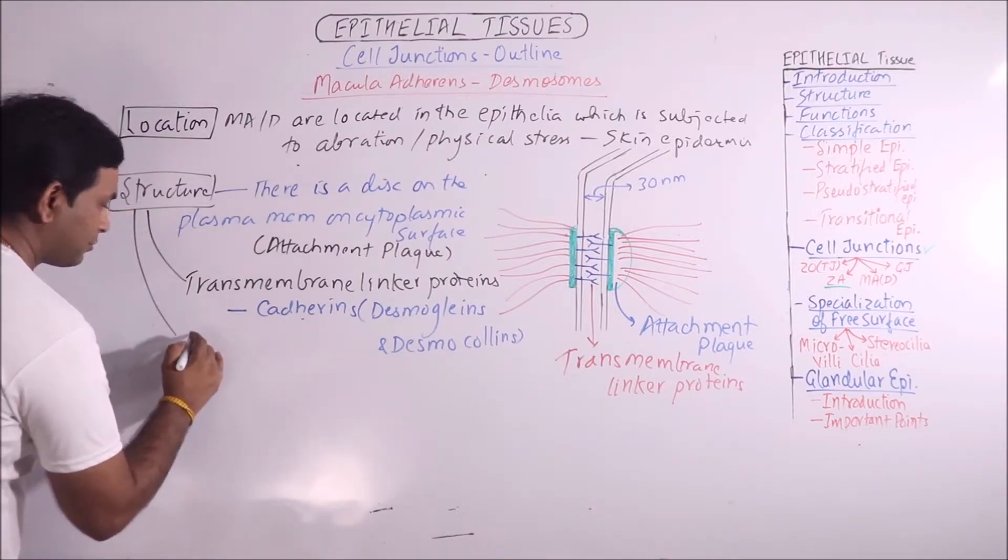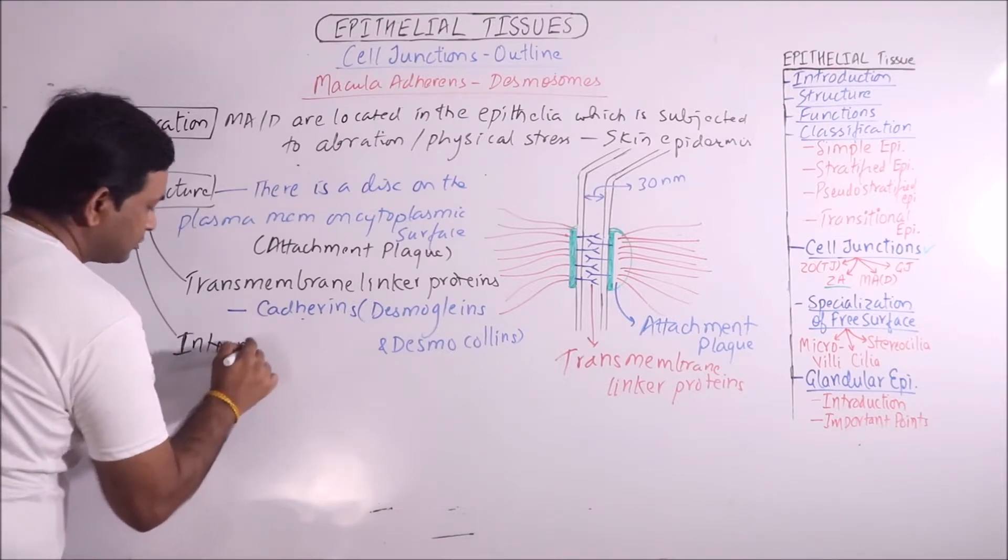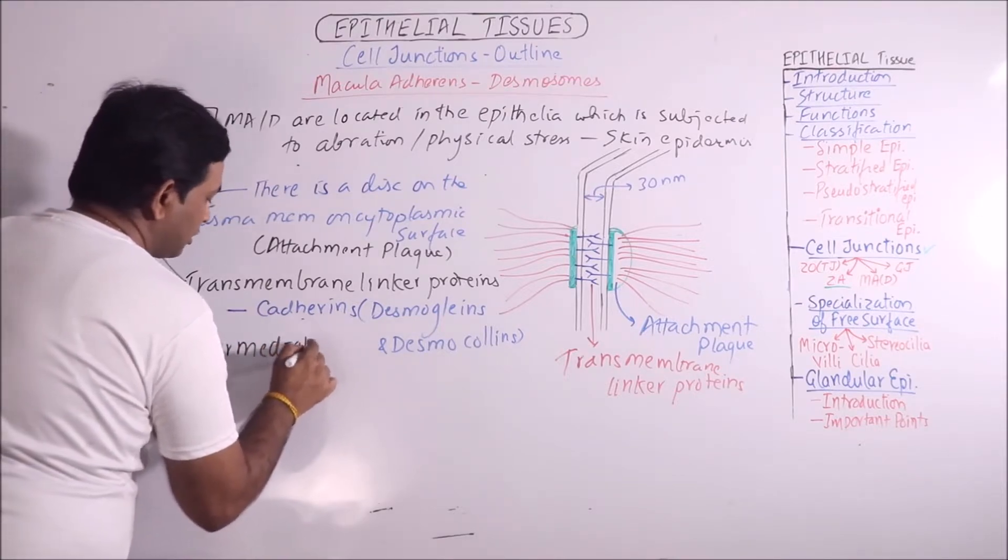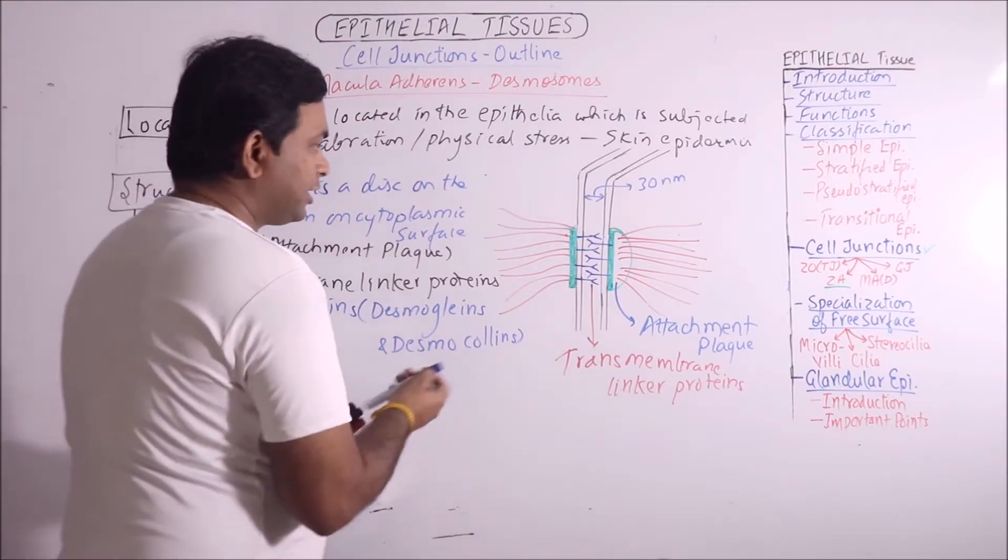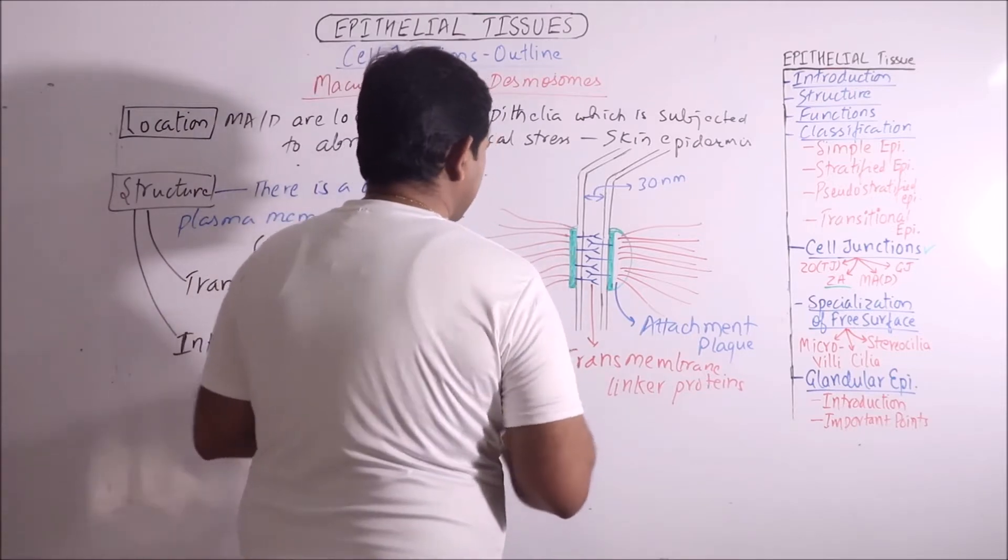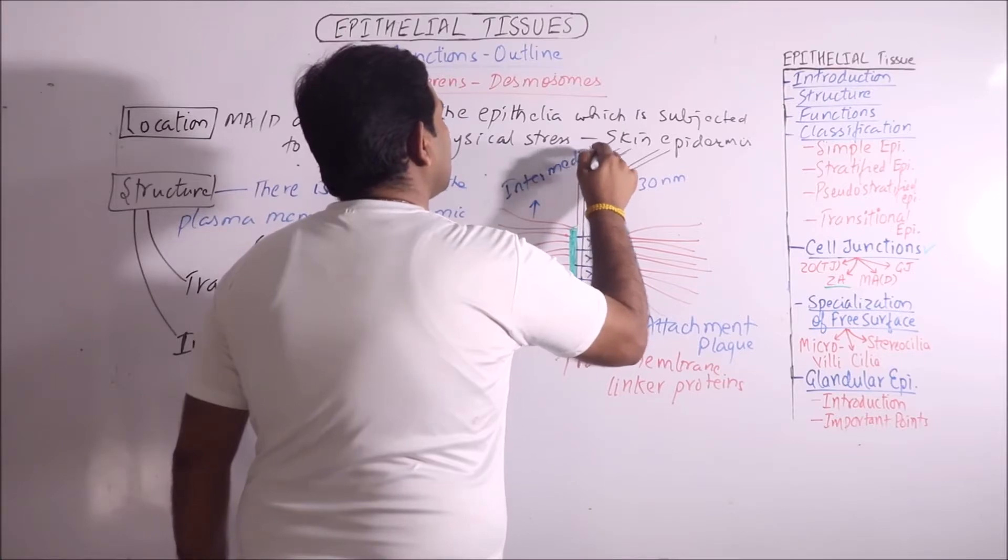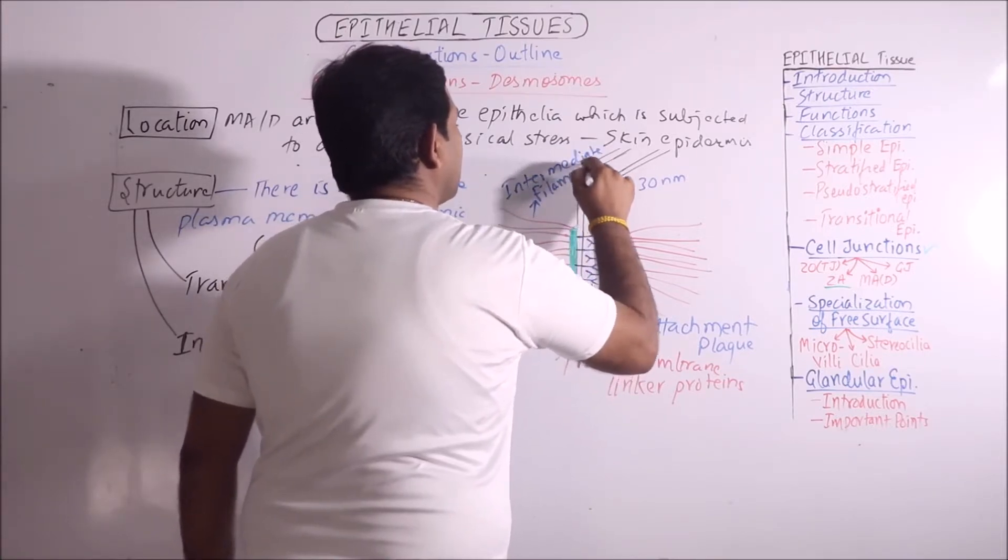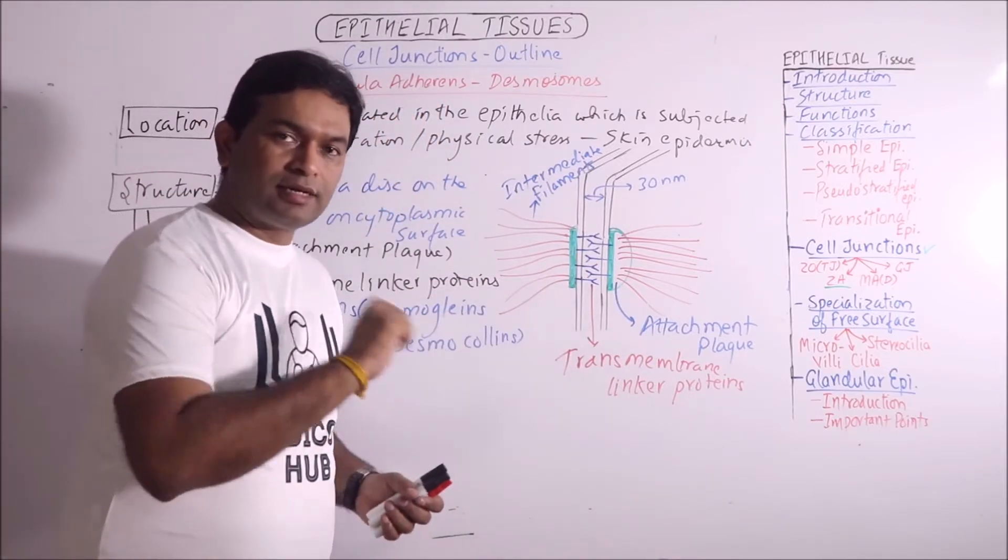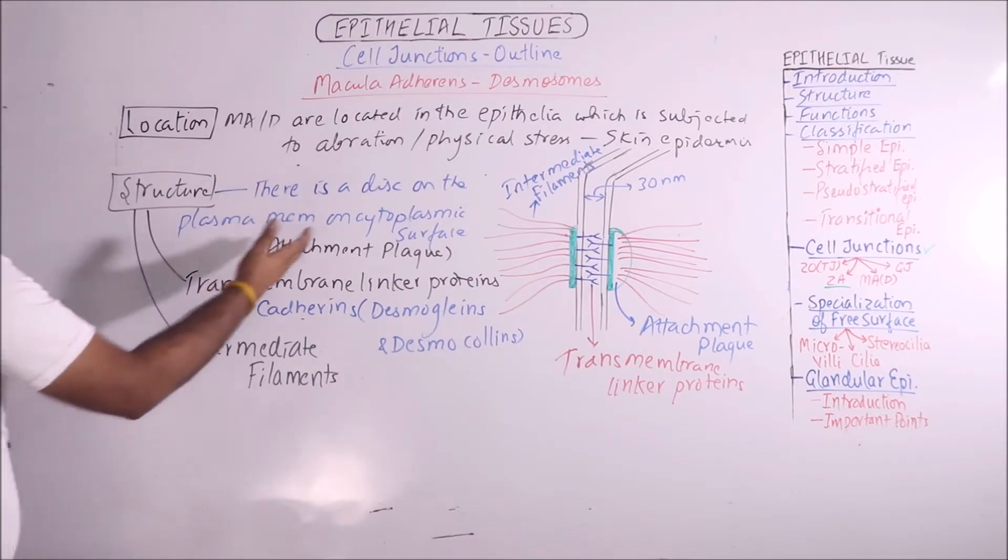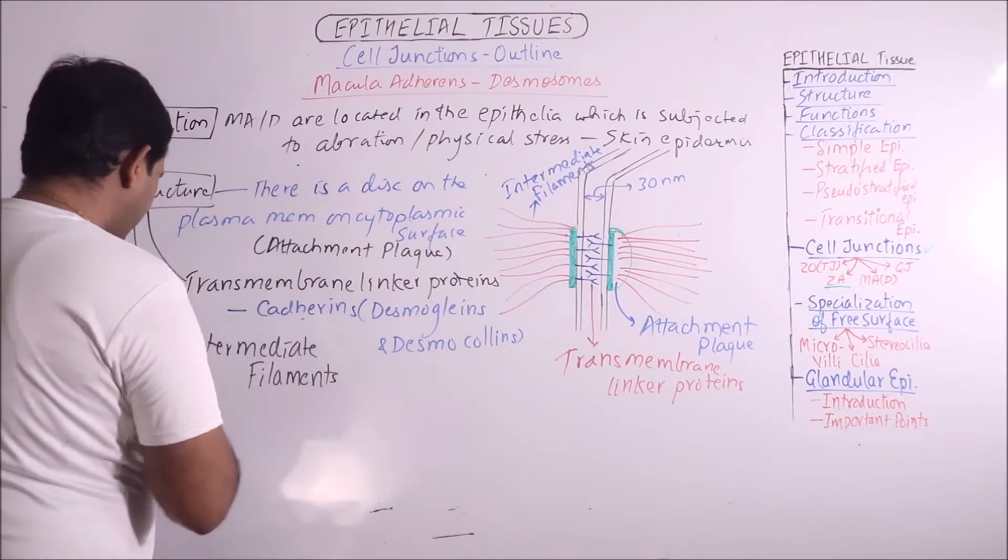Then next is the intermediate filaments. Intermediate filaments terminate on this disc. These are intermediate filaments. As this is disc like, it will not encircle the cell throughout its circumference. These are the three important parts: attachment plaque, transmembrane linker proteins and the intermediate filaments.